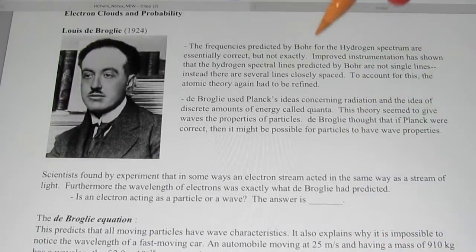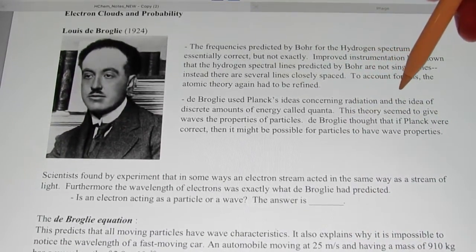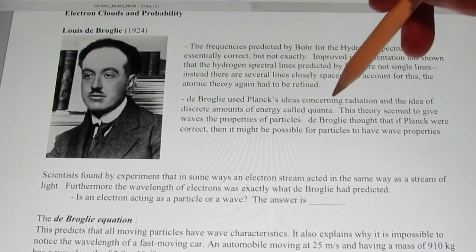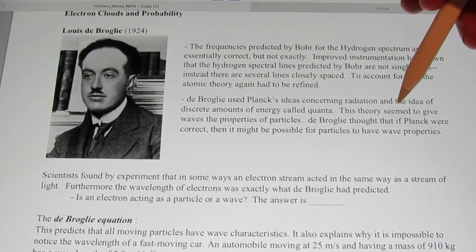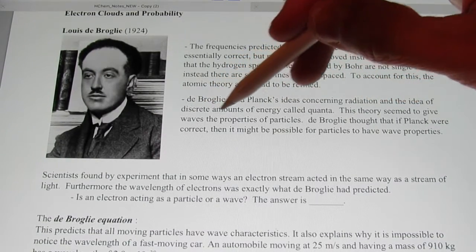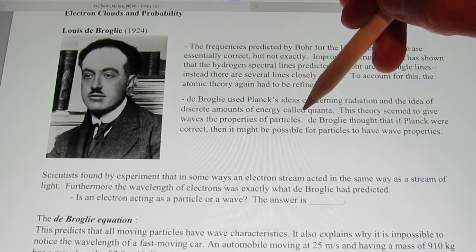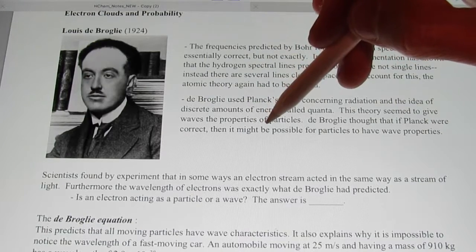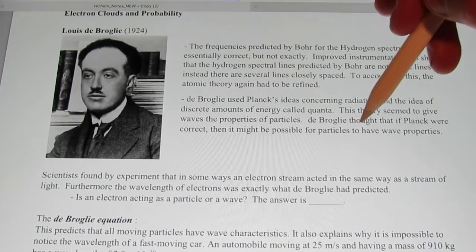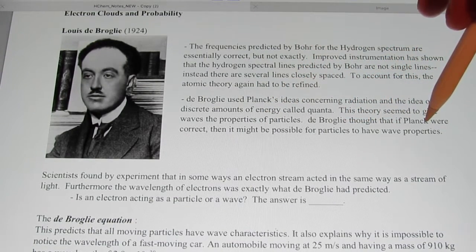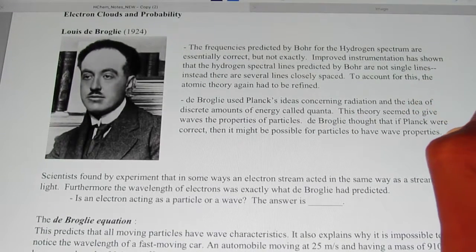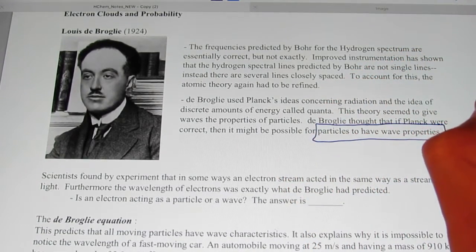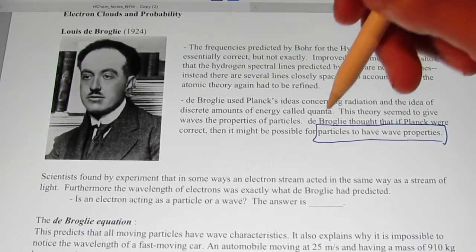De Broglie used Planck's ideas concerning radiation and the idea of discrete amounts of energy called quanta. This theory seemed to give waves the properties of particles. De Broglie thought if Planck were correct, then it might be possible for particles to have the properties of waves. And that's very, very profound, that particles can have wave properties to them.